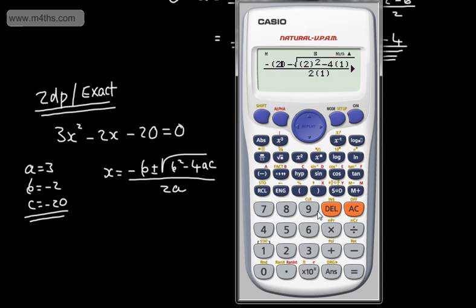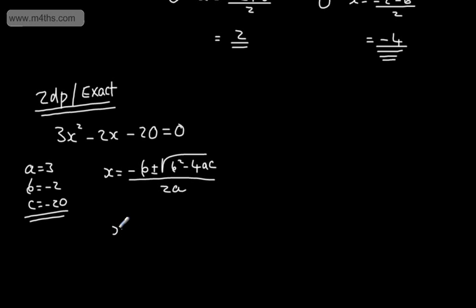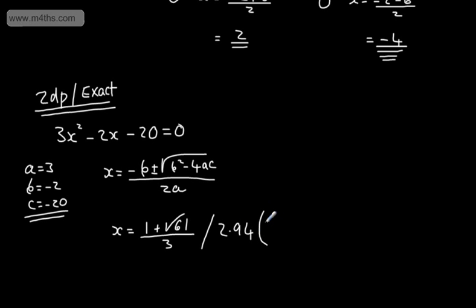Substituting in, we have negative b which is negative 2, then b squared is negative 2 squared, minus 4 times a which is 3, times c which is negative 20, all over 2 times a which is 3. This gives us an exact answer: x equals 1 plus the square root of 61, over 3. To two decimal places, that is 2.94.